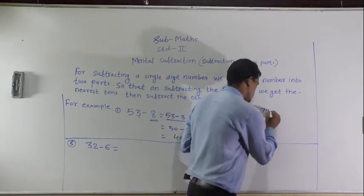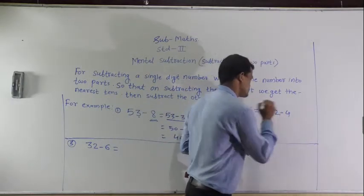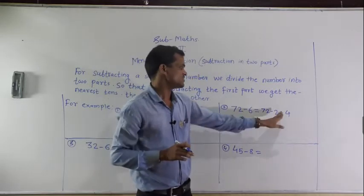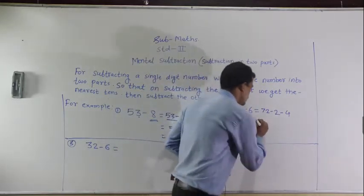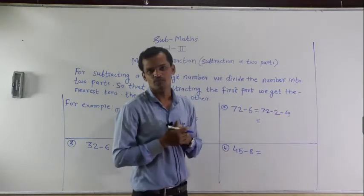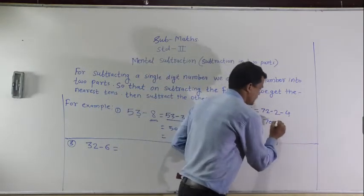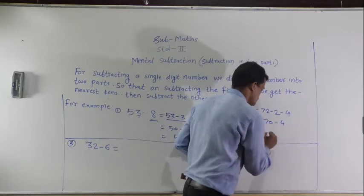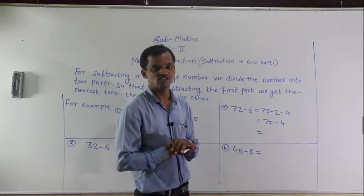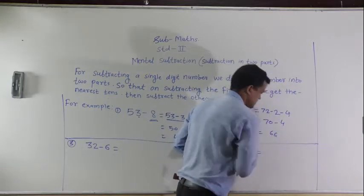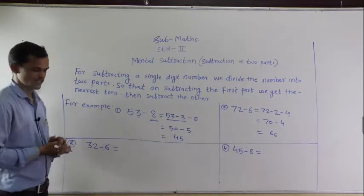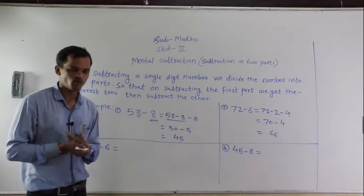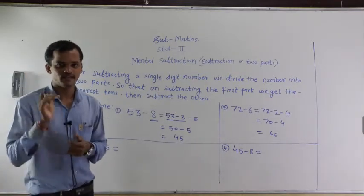Write it as 72 minus 2 minus 4. Do the subtraction: 72 minus 2 equals 70, then subtract the next part. 70 minus 4. Now in the next step, the ones place digit of 32 is 2. So when we subtract 2 from 32, we will get the whole ten, that is 30.